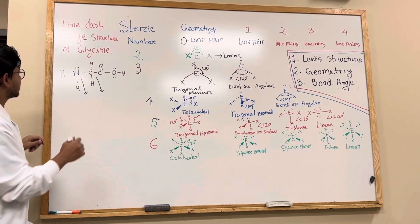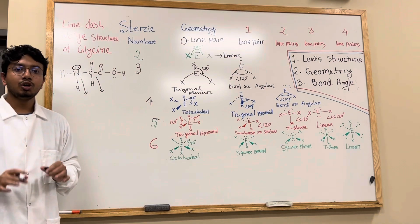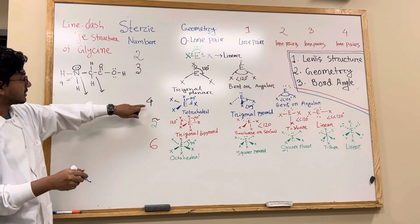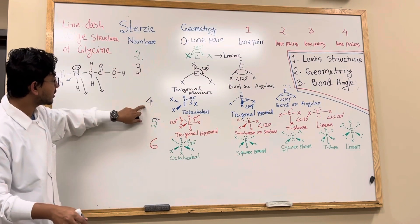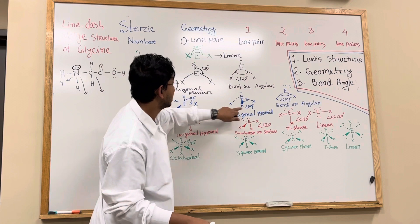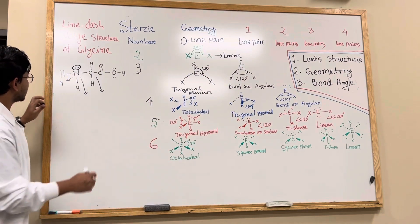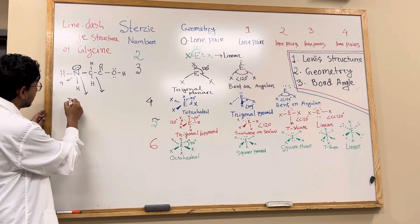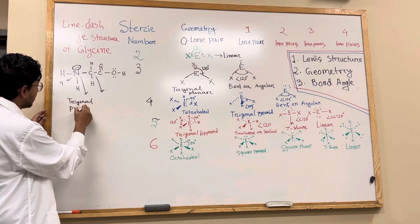For nitrogen, you can see there are 1, 2, 3 bonds and 1 lone pair, which means nitrogen has a steric number of 4. We match that number with the table. With steric number 4 and 1 lone pair, it will be trigonal pyramidal — because it has 1 lone pair electron — so if I redraw that structure, it will be trigonal pyramidal.